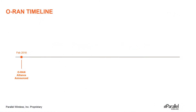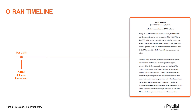The ORAN Alliance was announced at MWC 2018. We have discussed in our earlier video that it was formed by a merger of two different organizations, namely CRAN Alliance and XRAN Forum. CRAN Alliance consisted of China Mobile and a lot of other Chinese vendors. On the other hand, the XRAN Forum consisted of US, European, Japanese, and South Korean vendors and operators.